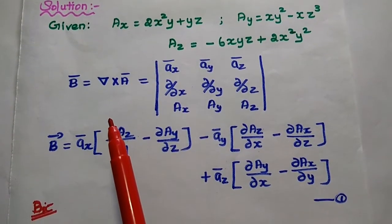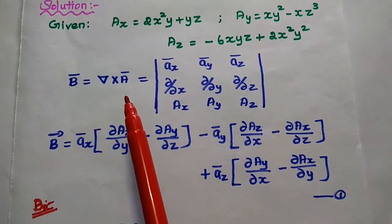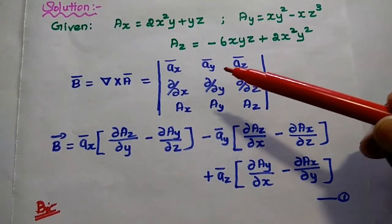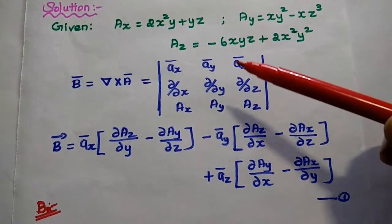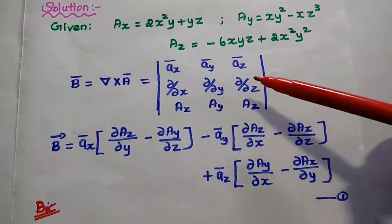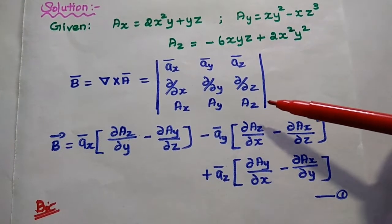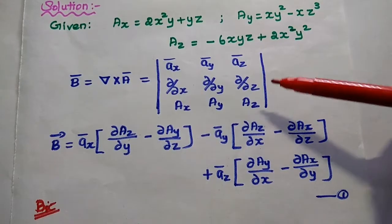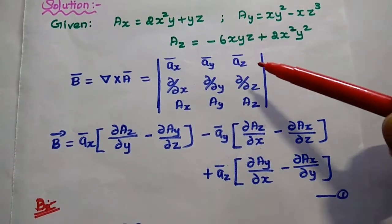We are going to find out the magnetic flux density using the formula B vector = del cross A vector. The curl is expressed as the determinant with unit vectors ax̄, ay̅, az̄ in the first row, partial derivatives ∂/∂x, ∂/∂y, ∂/∂z in the second row, and Ax, Ay, Az in the third row. This is the formula for the curl operation and next we solve this matrix.